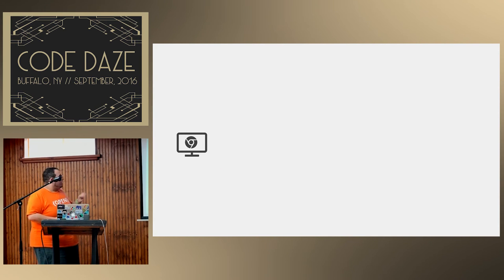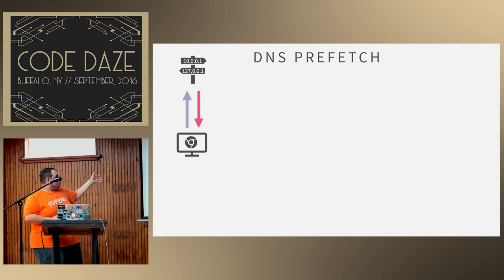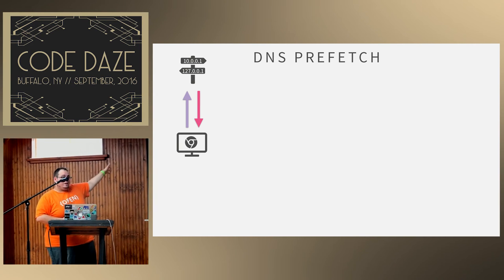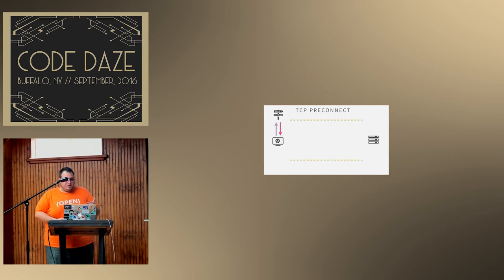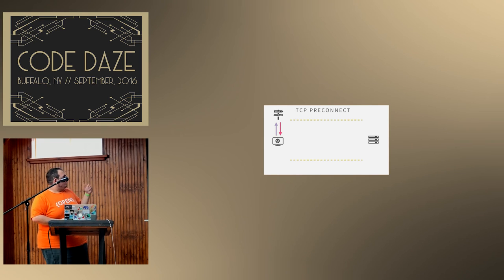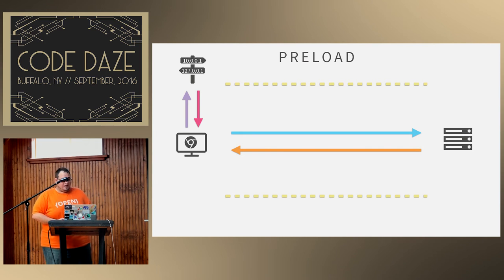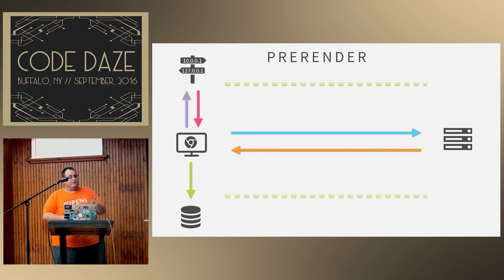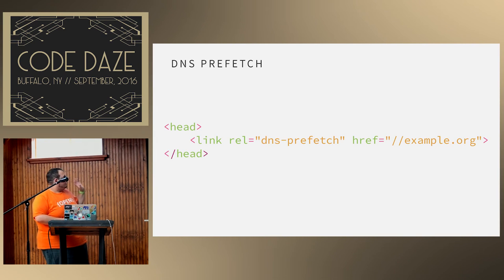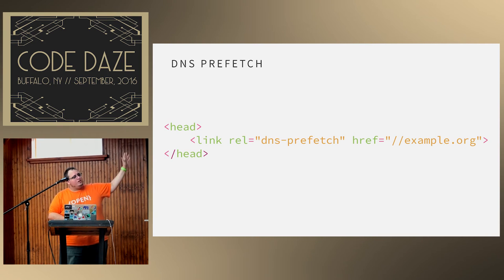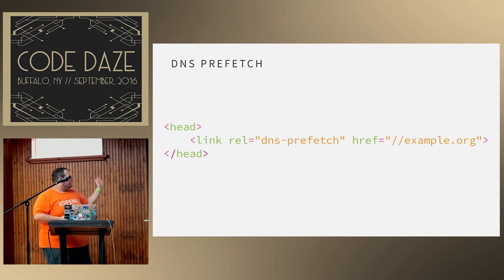These are all implemented using link tags in your head. For DNS prefetch: '<link rel="dns-prefetch" href="//example.org">' — no protocol, just double-slash and the domain, because there's no protocol in DNS. For pre-connect: '<link rel="preconnect" href="https://example.org">' — this time you specify the protocol because you're opening an actual TCP connection. For prefetch: '<link rel="prefetch" href="/resource">' — you can use a relative URL. And finally, pre-render: '<link rel="prerender" href="/next-page">' — basically the same pattern.